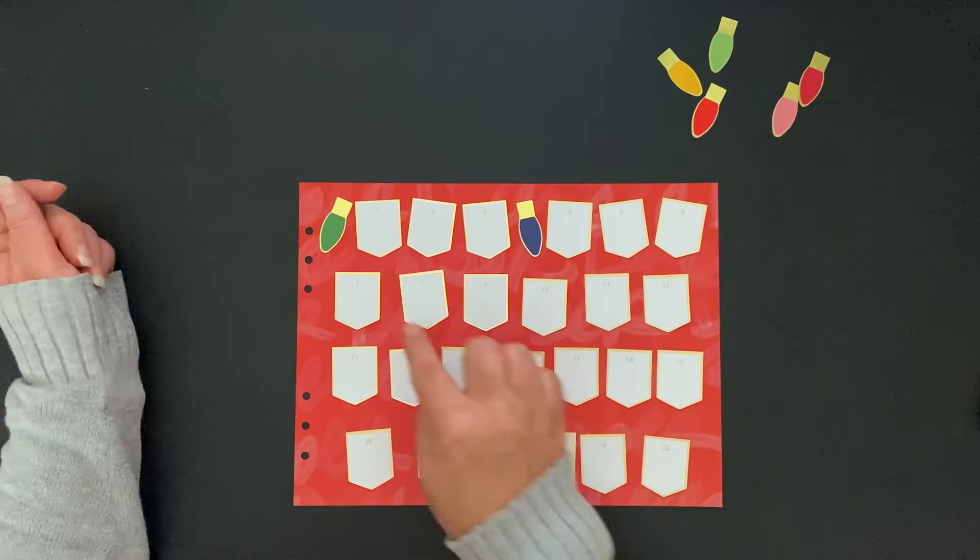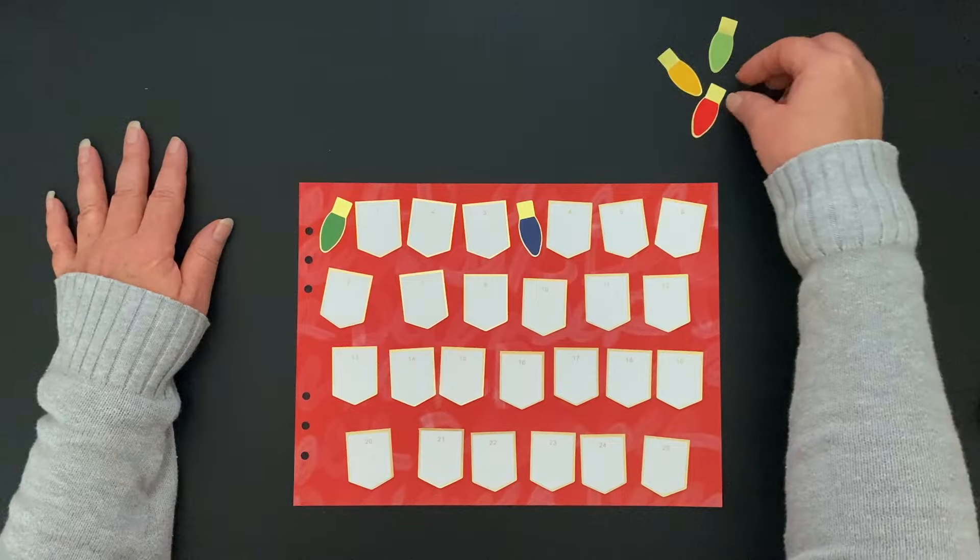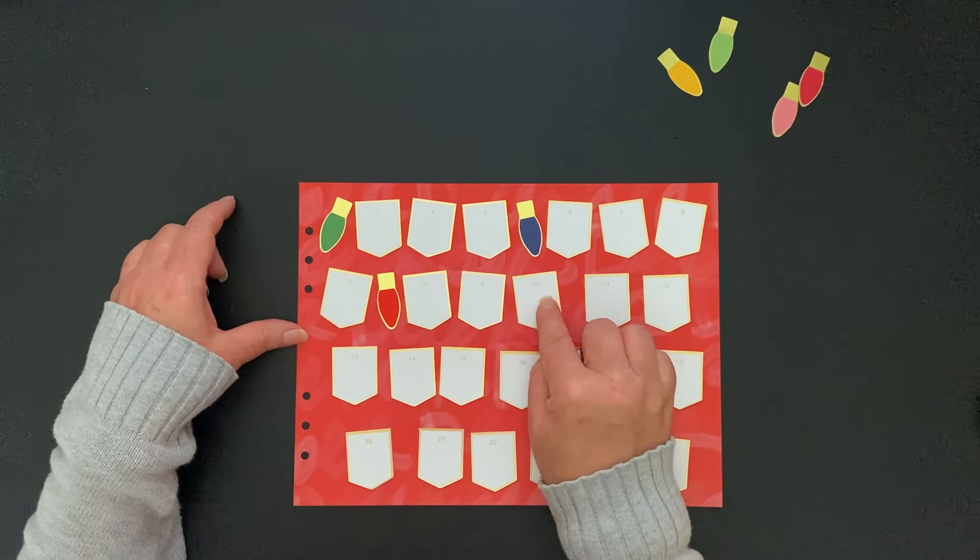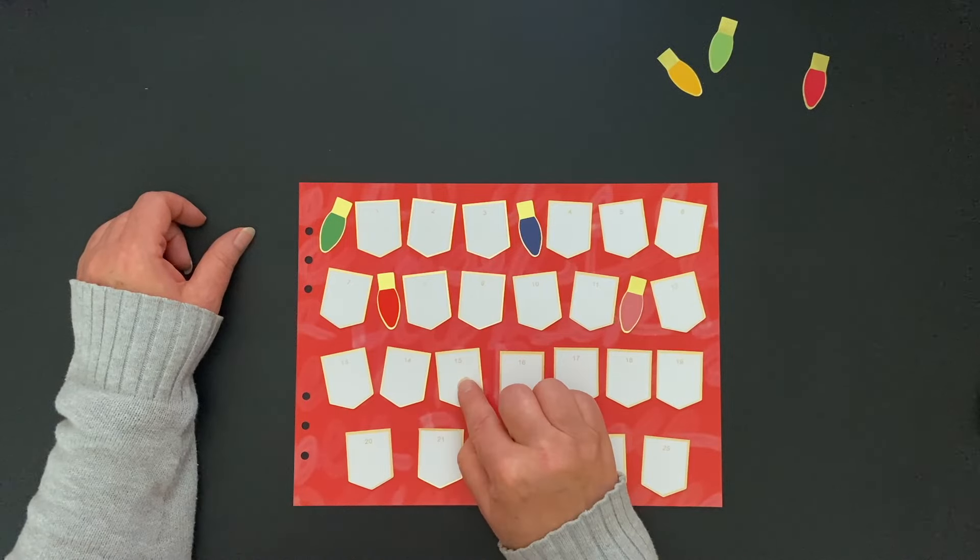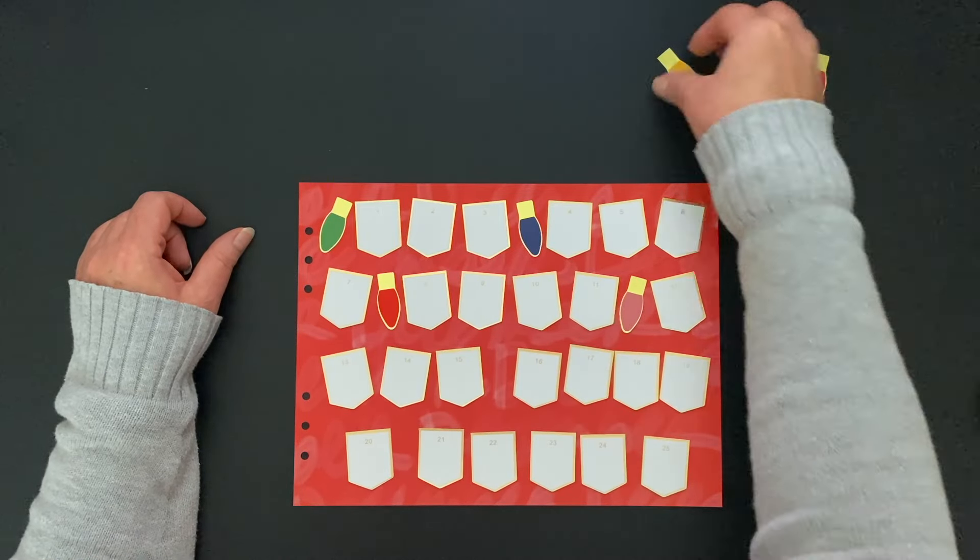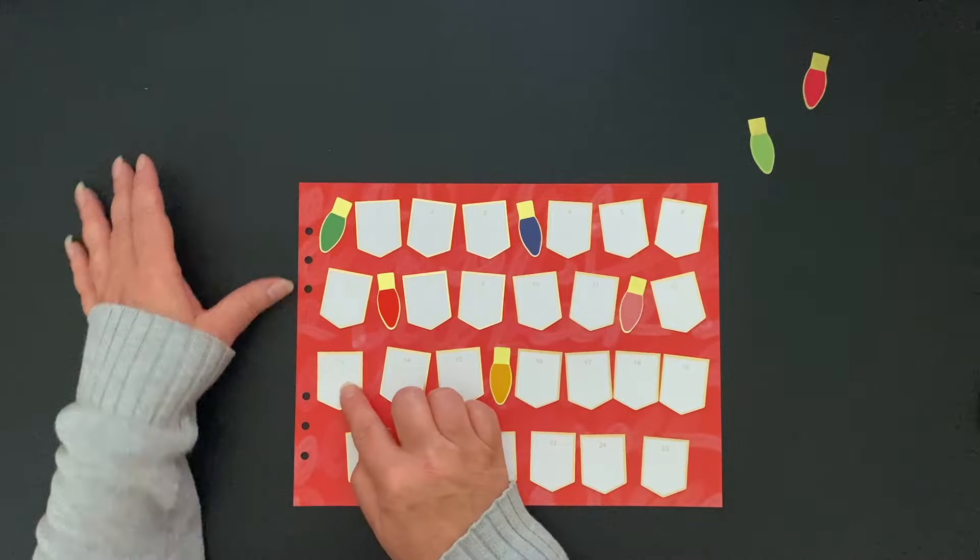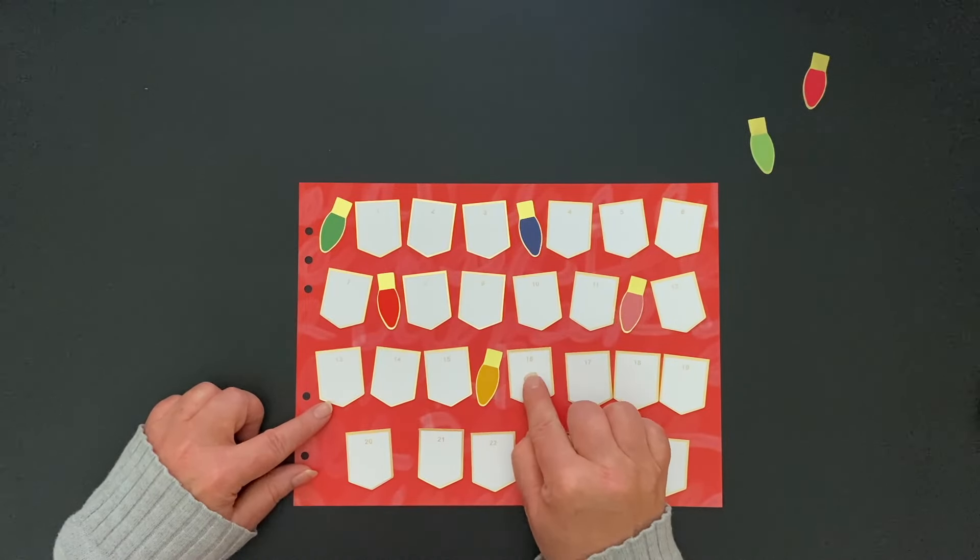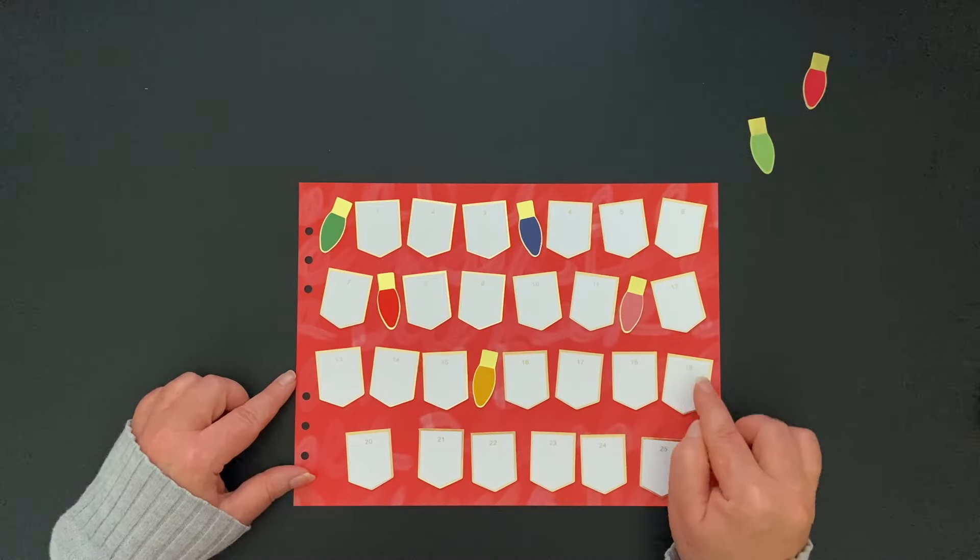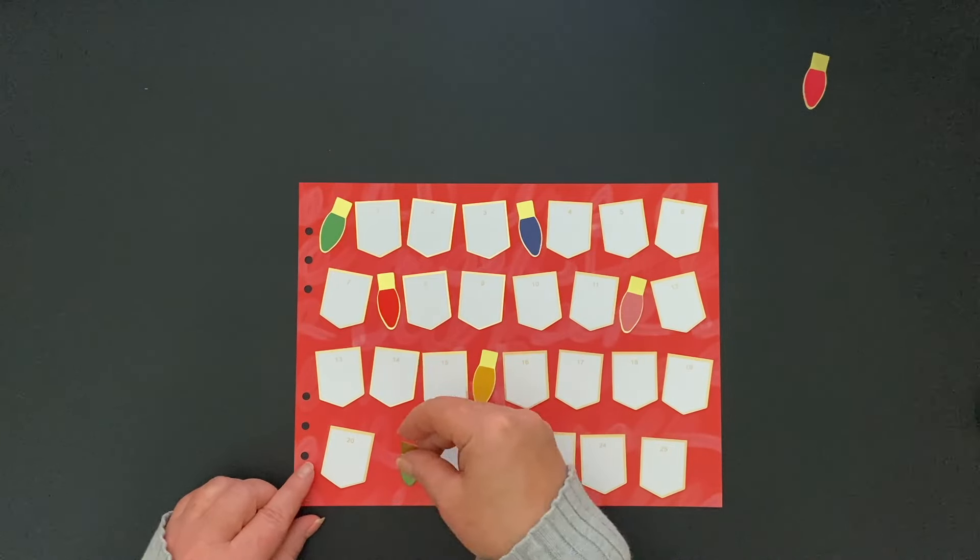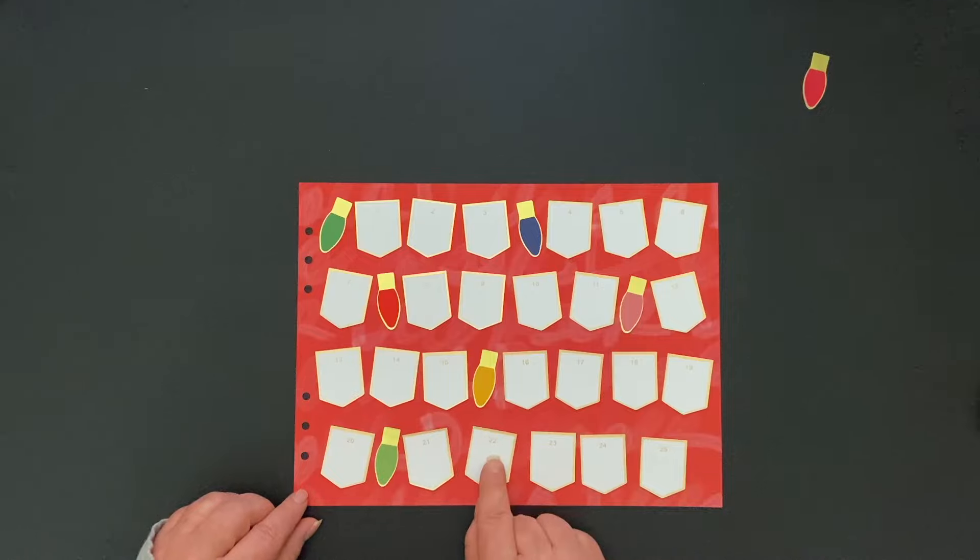Between each of the banners, just spacing them out a little bit, I'm adding one of these bulbs. I think I come to a total of seven bulbs that I use. You're just going to want to eyeball it, look and see what looks good. I wanted some of the bulbs to be pointing in different directions and scattered throughout the page.